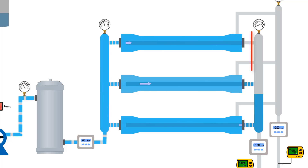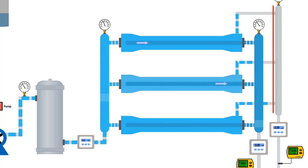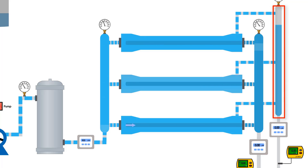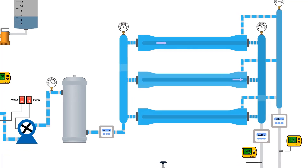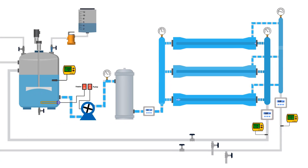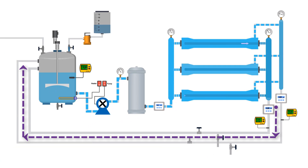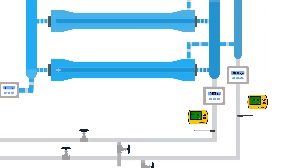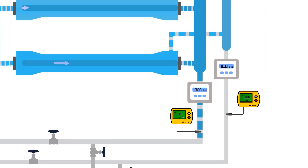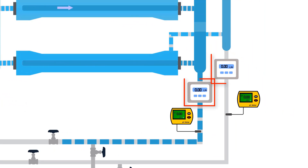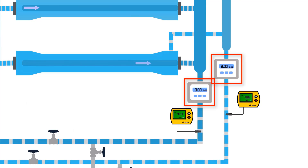Permeate goes to the permeate header, while reject goes to the reject header. Both headers are connected to the mixer tank and continuously feed the solution back to it. The flow meters show the permeate and reject flow rates respectively.